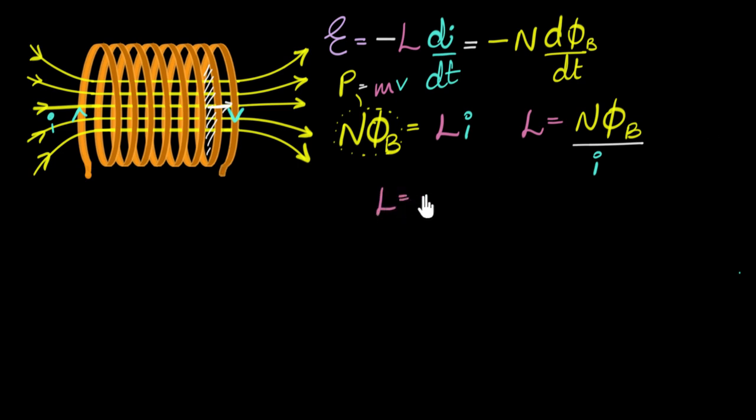And so if I plug that in, I will get self-inductance equals N times the flux, which is just B, the magnetic field over here, times the area, divide by I, sorry.